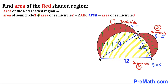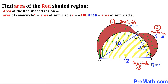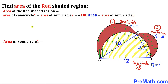Let's make an observation. The area of the red shaded region equals the area of semicircle 1 plus the area of semicircle 2 plus the area of right triangle ABC minus the area of semicircle 3. So our task is to calculate the area of semicircle 1, semicircle 2, triangle ABC, and semicircle 3.